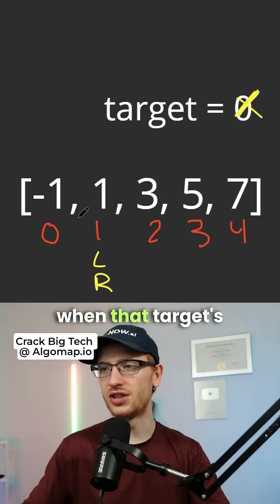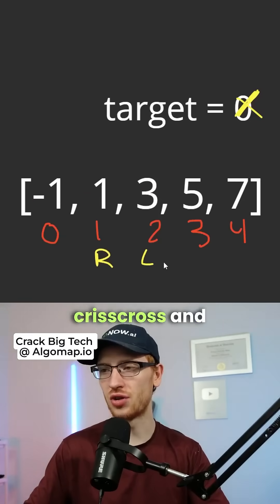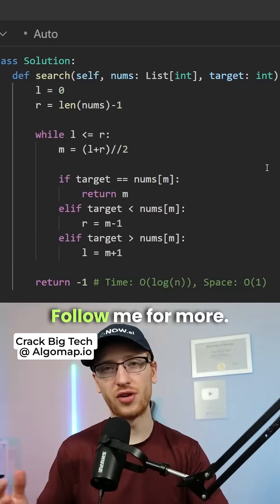Now in the alternate scenario, when that target's not even in the array, we'd actually get l and r are going to crisscross and usually return negative 1. Follow me for more.